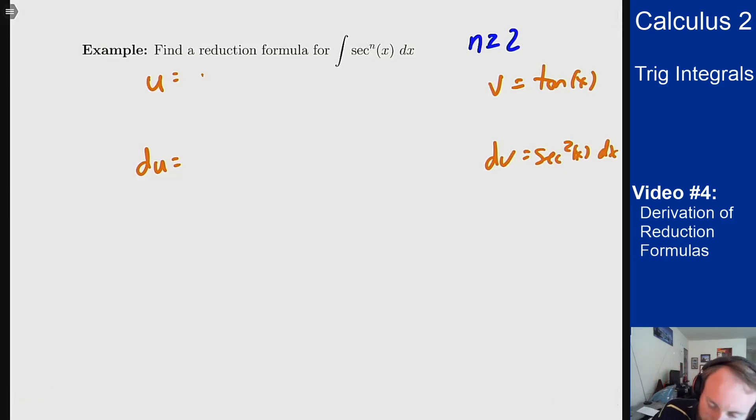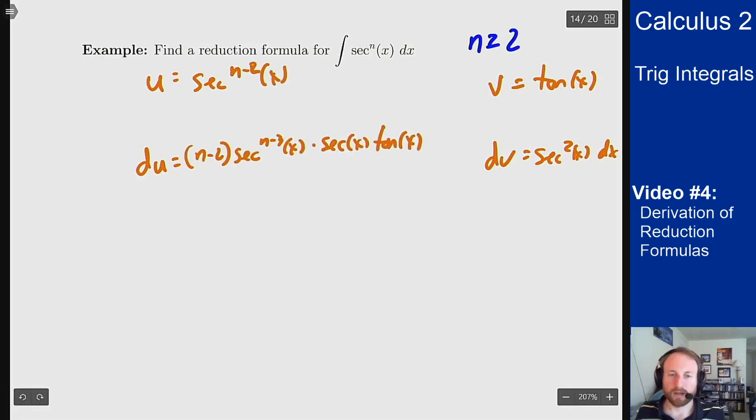This leaves u as secant to the n minus 2 of x and I can find that derivative using the power rule and chain rule like before. And those would combine to make a secant to the n minus 2 when we write them in the next step.